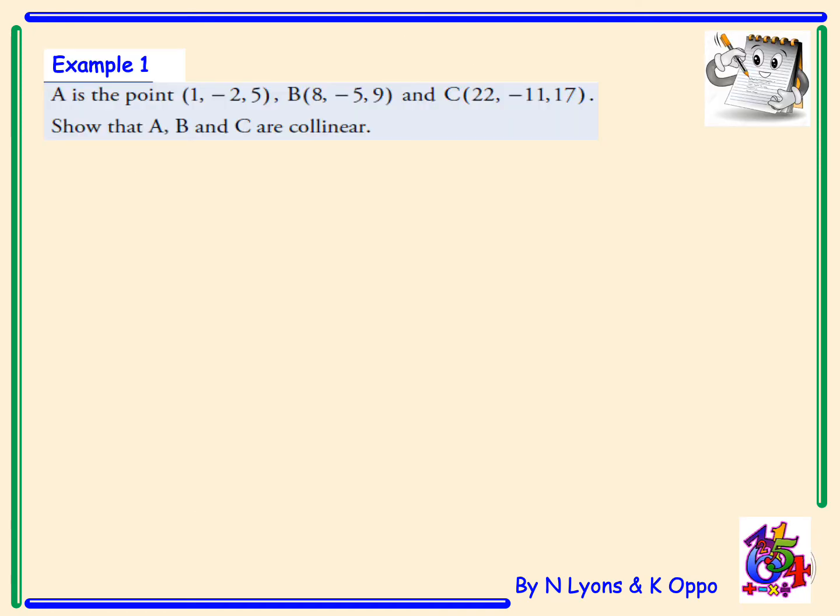Example 1. Here we've been given three points A, B and C, and we have to show that A, B and C are collinear. We will start by finding the vector AB.